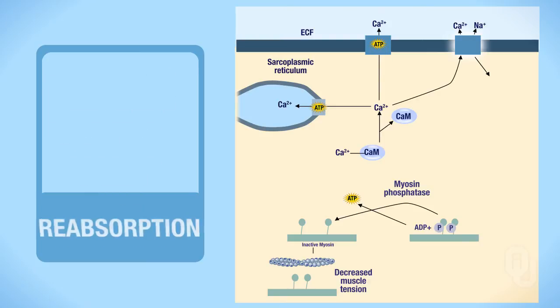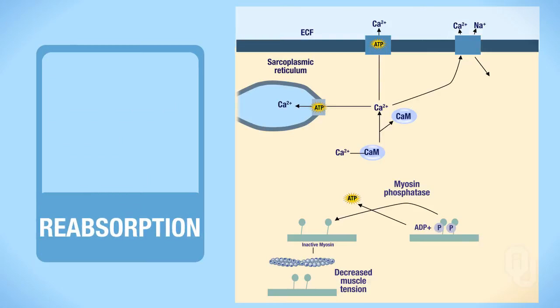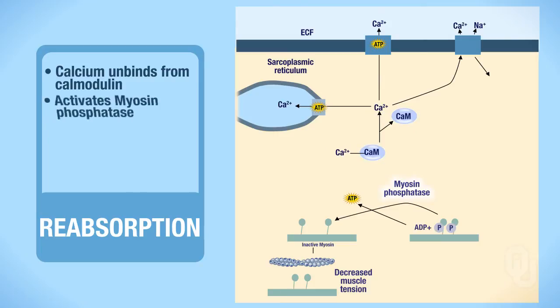Once we start reabsorbing calcium and putting it back where it came from, calcium unbinds from calmodulin. That will then activate myosin phosphatase.